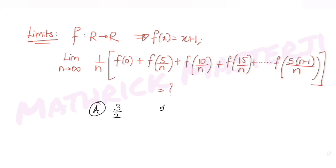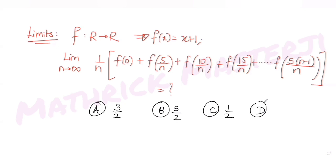The answer choices are 3 over 2, 5 over 2, 1 over 2, and 7 over 2. We need to figure out which one is the correct answer for this limit expression.